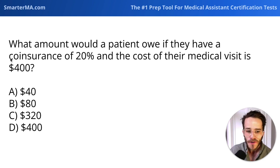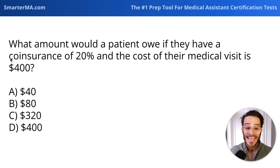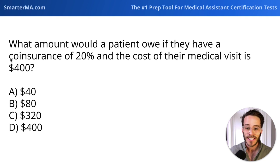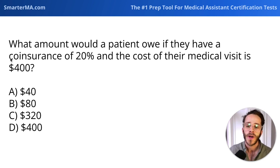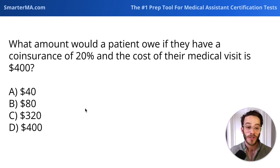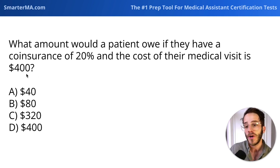First off, what does coinsurance mean? That's the amount that the insured — the patient — is responsible for paying compared to the amount that the insurance company will cover. So coinsurance of 20% means the patient is responsible for 20% of the total, which in this case is $400.